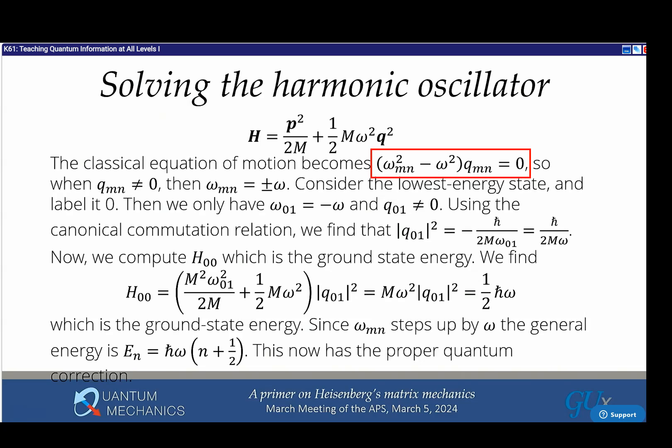To solve the harmonic oscillator, the classical equation of motion becomes (ω_mn^2 - ω^2) times the matrix q equals zero. Factorizing this difference of squares tells you ω_mn equals plus or minus ω. You can only have a nonzero element in the q matrix if m and n differ by plus or minus one. We inferred it without any operators or differential equations.